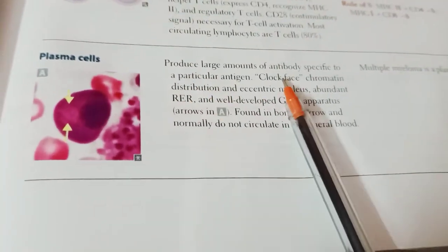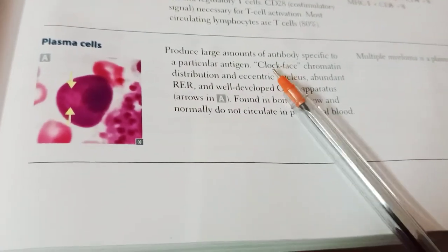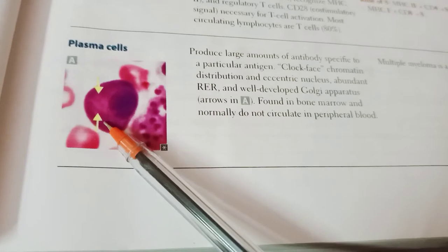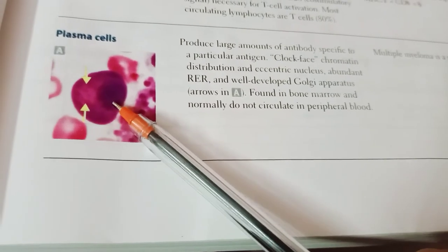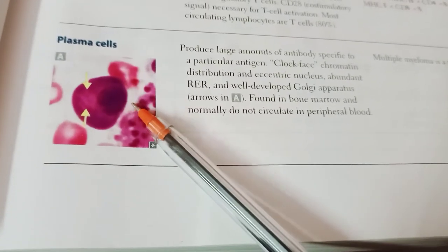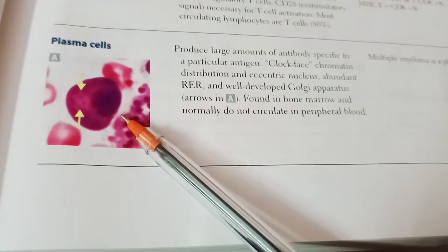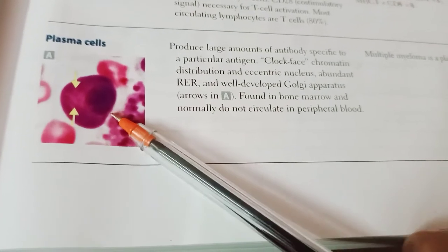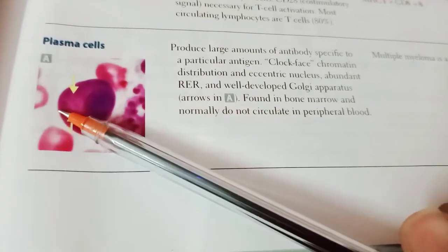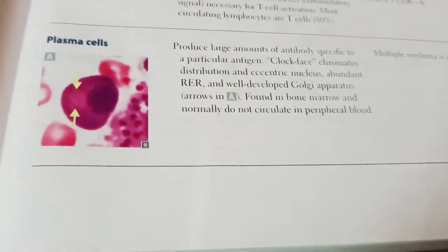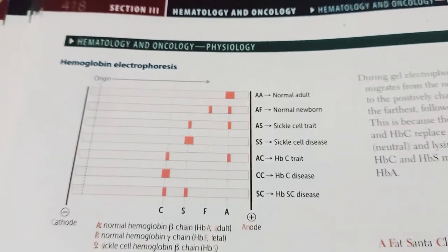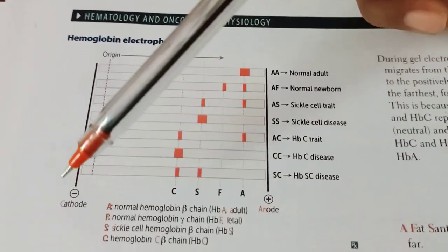Plasma cells produce large amounts of antibodies specific to a particular antigen. They have clock-face chromatin distribution, an eccentric nucleus, abundant rough endoplasmic reticulum, and a well-developed Golgi apparatus. They are found in bone marrow and do not normally circulate in peripheral blood. Multiple myeloma is a plasma cell disease.